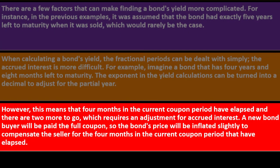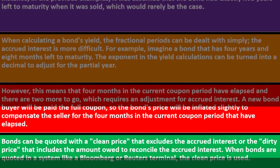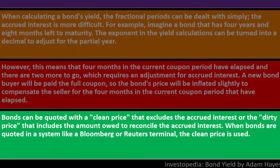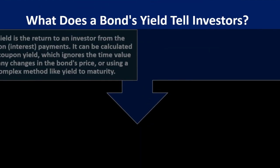A new bond buyer will be paid the full coupon even though they haven't held the bond for the whole 6-month period. So the bond's price will be inflated slightly to compensate the seller for the 4 months elapsed in the current coupon period. Bonds can be quoted with a 'clean price' that excludes accrued interest, or a 'dirty price' that includes the amount owed to reconcile the accrued interest. When bonds are quoted on systems like Bloomberg or Reuters, the clean price is used.